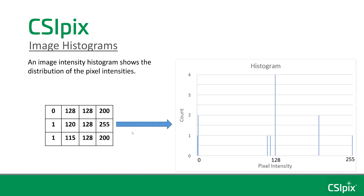An intensity histogram is a graph of the number of pixels with each possible intensity in the image. Here's the histogram for this mini-image. You can see that at intensity 0 there's 1 pixel, there are 2 pixels with intensity 1, 1 pixel with intensity 115, 1 pixel with intensity 120, and there are 4 pixels with intensity 128, and so on.